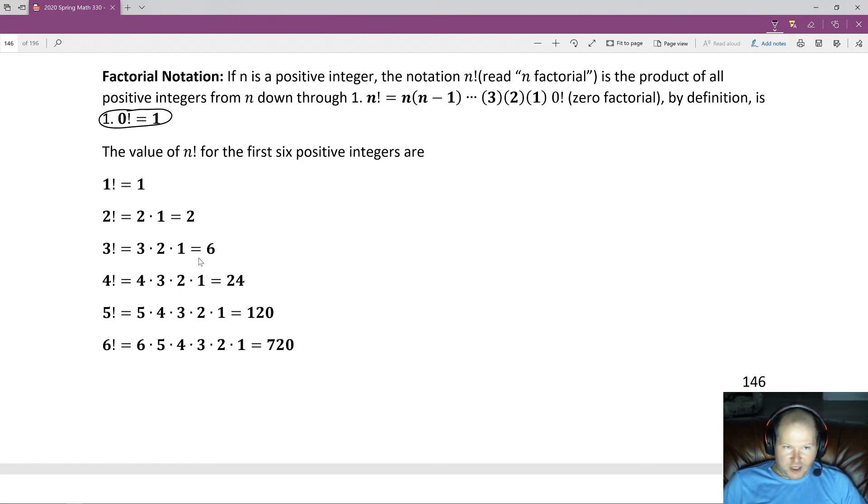Factorial 1 means we just multiply by 1. 2 factorial is equal to 2 times 1. 3 factorial is equal to 3 times 2 times 1. 4 factorial is equal to 4 times 3 times 2 times 1. And so on and so forth. The pattern repeats. So we just want to understand this pattern.